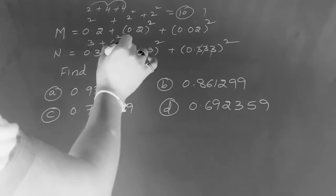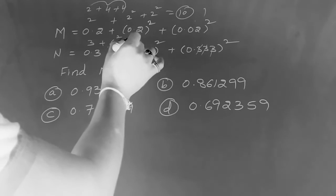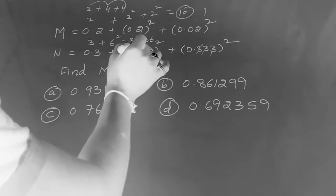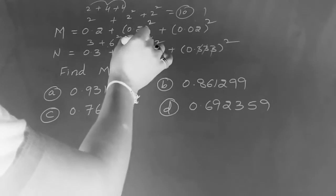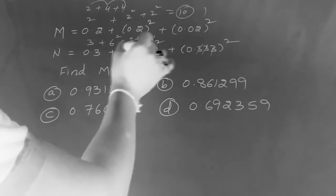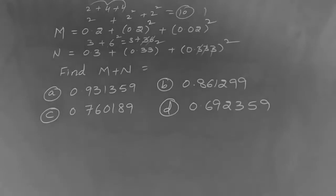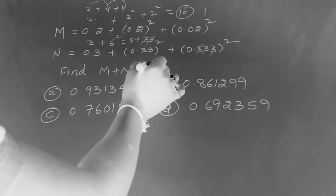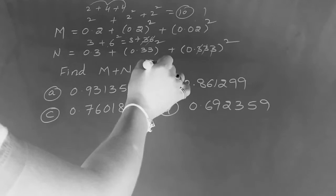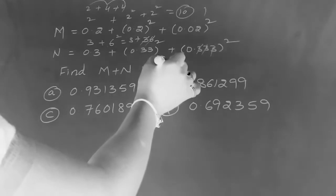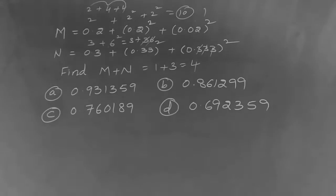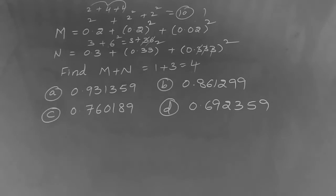Here is 3 plus 6 squared is 36. 3 plus 6 is 9, cut it. The digital sum is 3. M digital sum is 1. N digital sum is 3. Total digital sum is 4. Check the answer options.